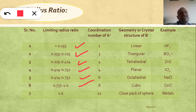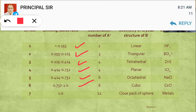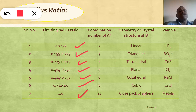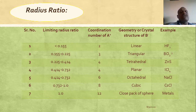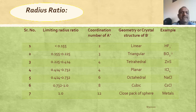If the radius ratio value is 1 or greater than 1, the coordination number is 12 and the geometry is close-packed sphere. So with the help of the radius ratio value, one can understand the geometry of the crystal as well as the coordination number of the particular cations in the crystal. That is the simplest method to understand all these things.